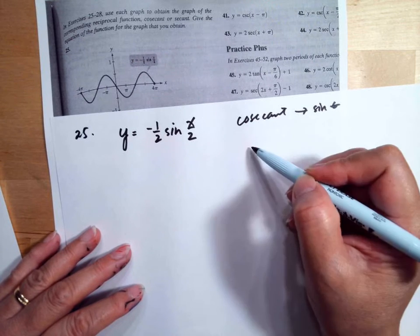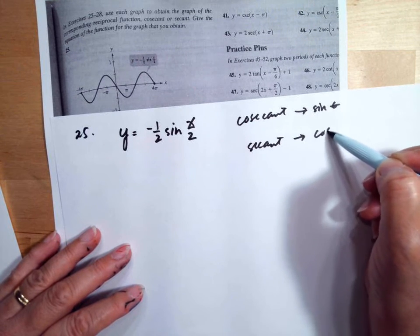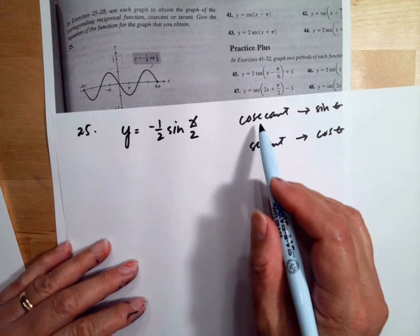Then for secant, we need to use the cosine function to graph. Now this is sine, so meaning it's cosecant.